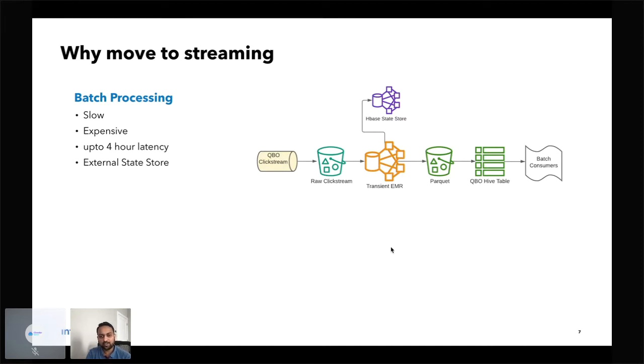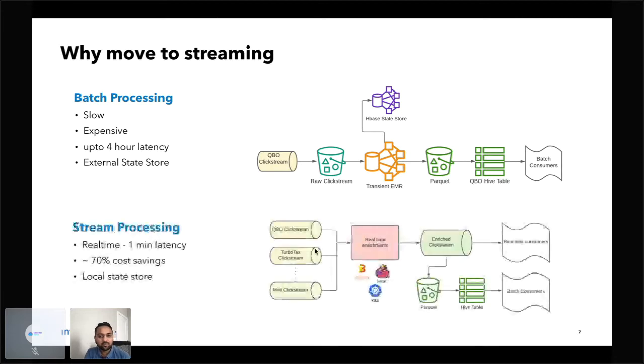Going from batch to streaming, the architecture is very simplified, where a stack of Beam on top of Flink runner, which is deployed on Kubernetes, essentially processes this data in real-time with one-minute latency. In addition to reducing the latency where real-time consumers can get data under a minute and start using it, batch consumers' SLAs also reduced to two hours from four hours. We also leveraged local state store to store the state for stateful processing and overall reduced the cost by 70%.